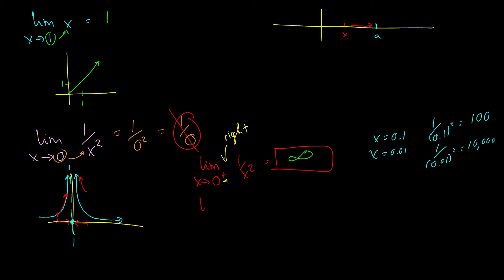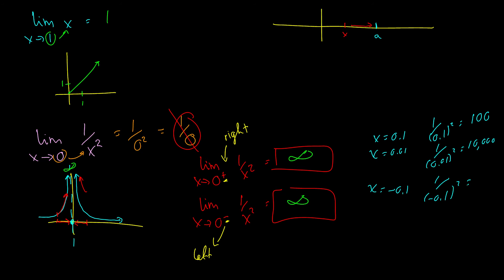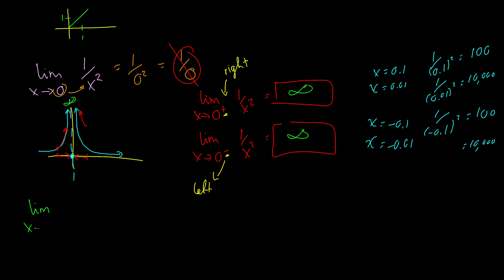Now we do it from the negative side. The limit as x goes to 0 from the left — denoted with a minus sign — of 1 over x squared. Looking at the graph, we guess it's also infinity. Checking: x equals negative 0.1 gives 1 over negative 0.1 squared which equals 100, and x equals negative 0.01 gives 10,000. So the limit from the left is also infinity. Since both sides agree, the limit as x goes to 0 of 1 over x squared equals infinity.